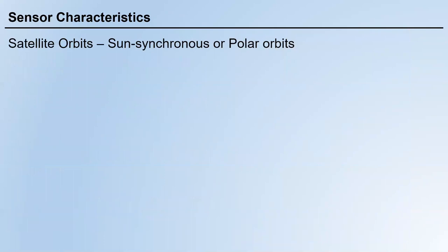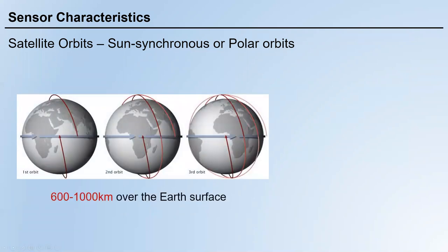Now let's talk about different characteristics of sensors. The first aspect I want to discuss is orbit. There are two types of satellite orbits. The first type is called sun-synchronous or polar orbit. The gray line indicates Earth's self-rotation, and the orbit line indicates the actual orbit of a polar orbit satellite, with an angle between the satellite orbit and the Earth's axis.